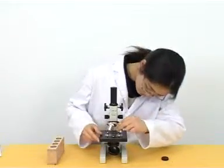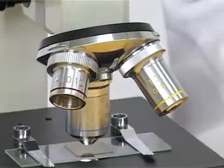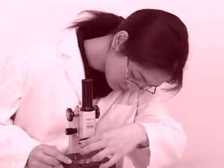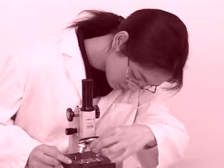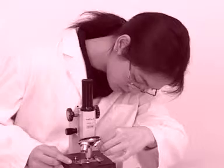Rotate the nose piece so that the high-power objective is in line with the body tube. We should watch the stage from one side while doing so. This is to prevent the objective from touching the slide.